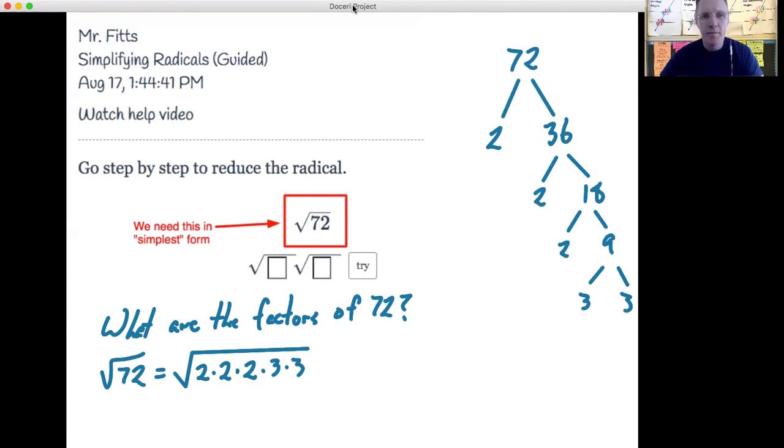So we can think about 72 as 2 times 2 times 2 times 3 times 3. This is just all prime factorization. So now, these pairs that I see underneath here—2 times 2 is 4, and 3 times 3 is 9. So I can actually rewrite radical 72 as radical 4 times radical 9 times radical 2. Whenever we think about radicals, we can split that out into its factors, and you just keep everything underneath the radical.